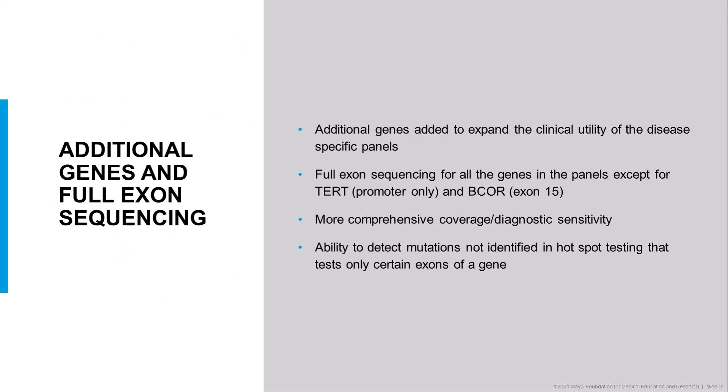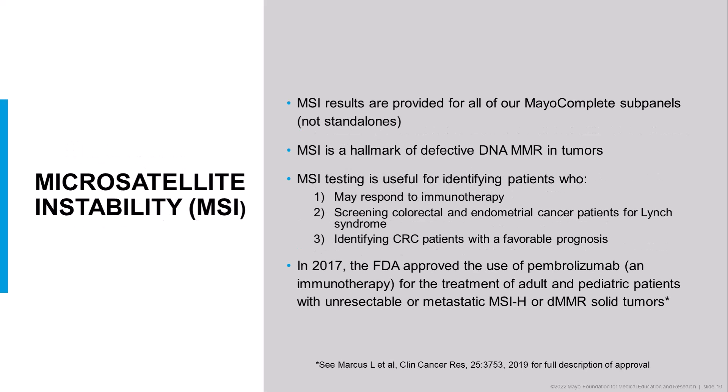Some of the enhancements we've made: we've added a number of additional genes to expand the clinical utility of the tests. We have gone from hotspot testing to full exon sequencing for all the exons and all the genes in the panels, with the exception of TERT, where we just sequence the promoter region, and BRAF, where we just sequence exon 15. By adding these extra genes and doing full exon sequencing, we're providing more comprehensive coverage and higher diagnostic sensitivity. We also offer a microsatellite instability result with all of our five subpanels.